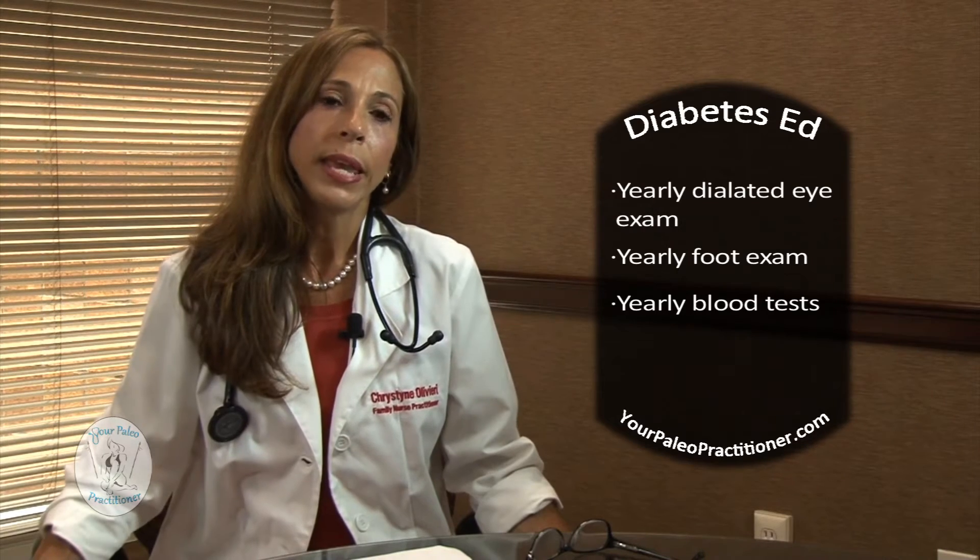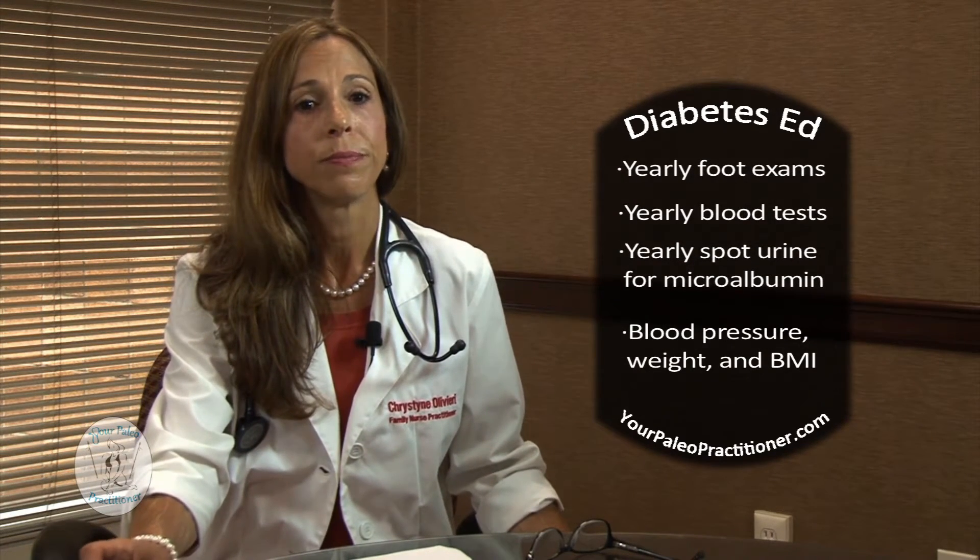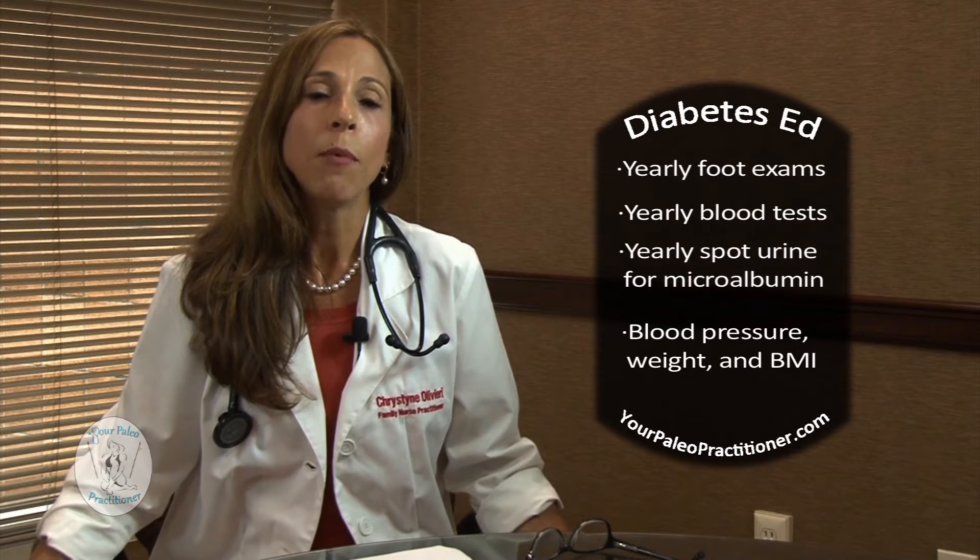The fourth thing you'll need to do in the diabetes club is a yearly spot urine for microalbumin. Many doctors fail to do this, but because I'm a certified diabetes educator, I know I can pick up kidney disease in you years before any other practitioner will find it in the blood work. The fifth thing you'll need to do on a yearly basis is check your blood pressure, your weight, and your BMI to make sure they do not increase.